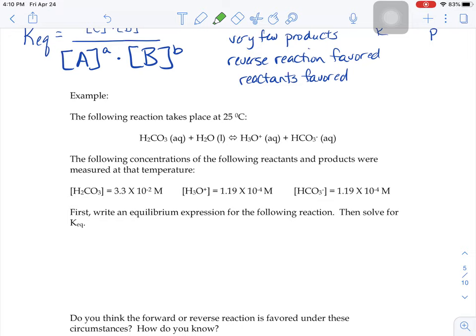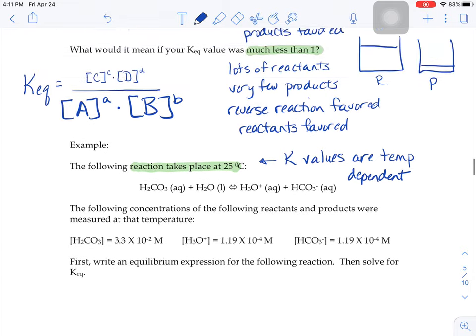One thing that I wanted to mention, if a reaction takes place at 25 degrees, you might see this in some practice problems where they give you a temperature. The K values that you calculate are temperature dependent. All reactions are either endothermic or exothermic. They either absorb heat energy from their surroundings or release heat energy to the surroundings. And because of that,